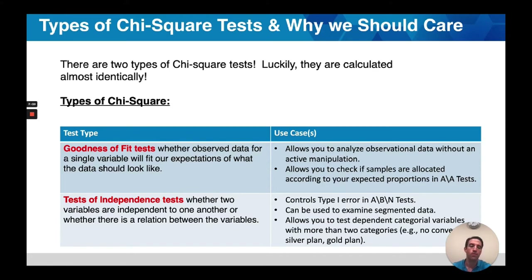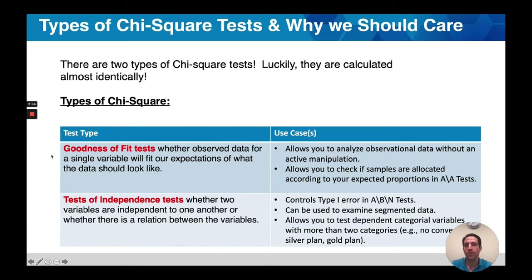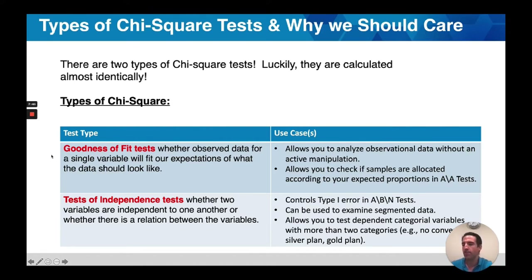The second application for a test of independence is to look at segmented data. Even when we do multiple comparisons between experimental variants, we need to do this adjustment, and we'll also have to do this for segmentation. Finally, and I think probably the coolest use of chi-square, is that it allows us to have a dependent variable with more than two outcome variables. In a proportions test, you're limited to a dichotomous outcome — they either converted or they didn't. With a chi-square test, we can have different levels, different types of outcomes. Imagine a scenario where someone converted to a silver or a gold plan — a chi-square analysis lets us know whether one of these is more likely to be selected than another.